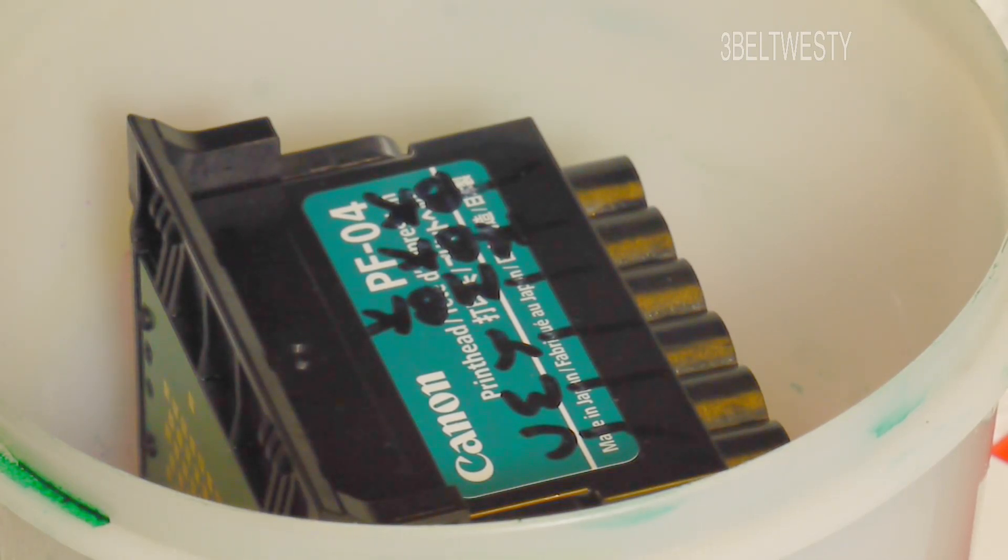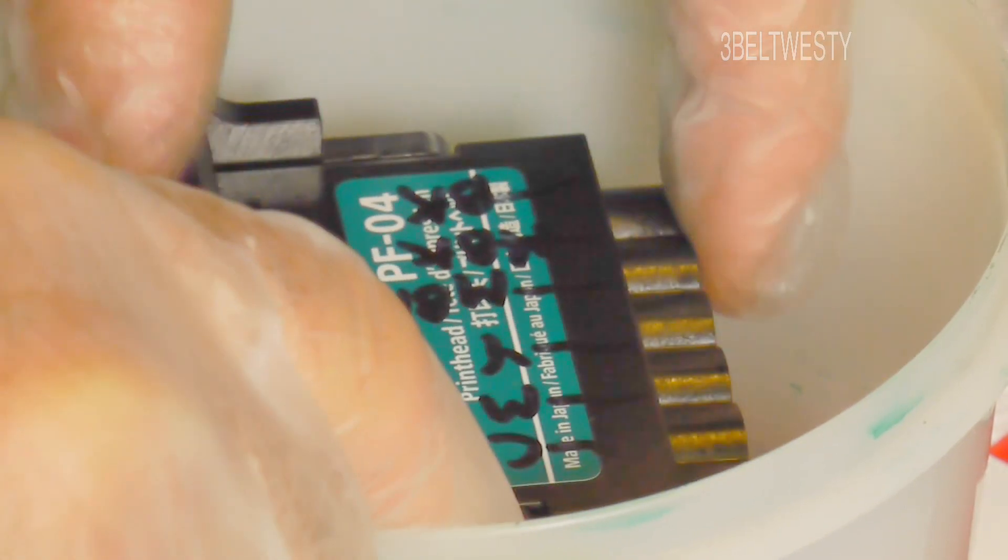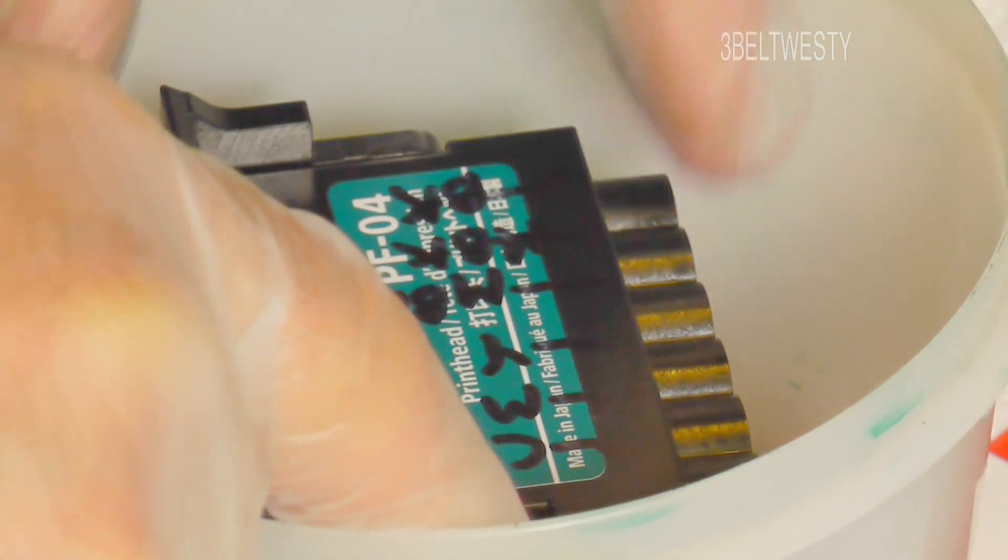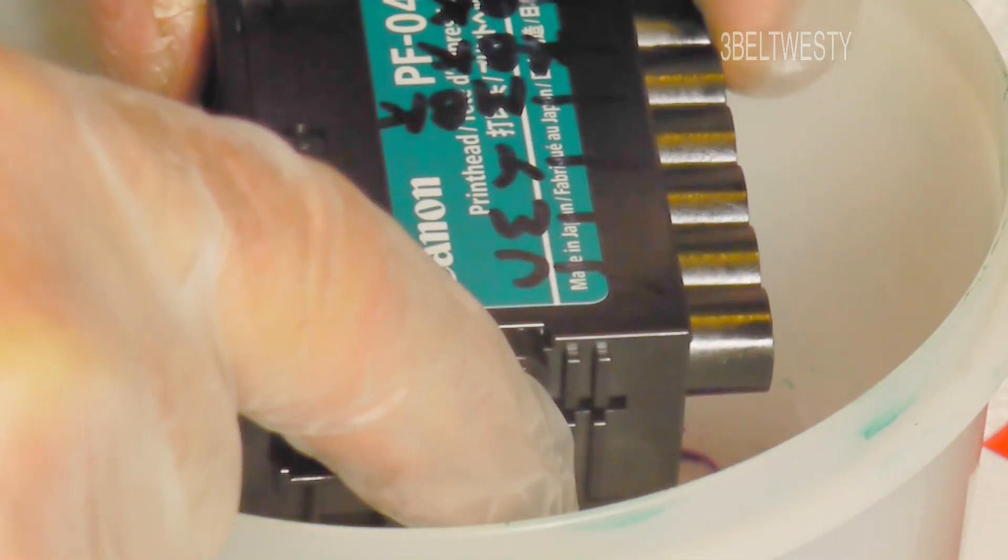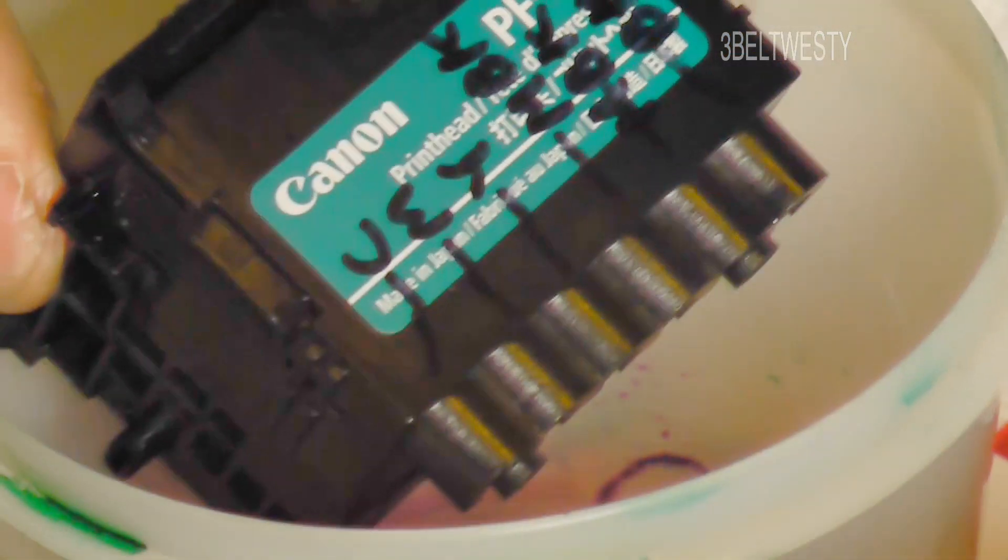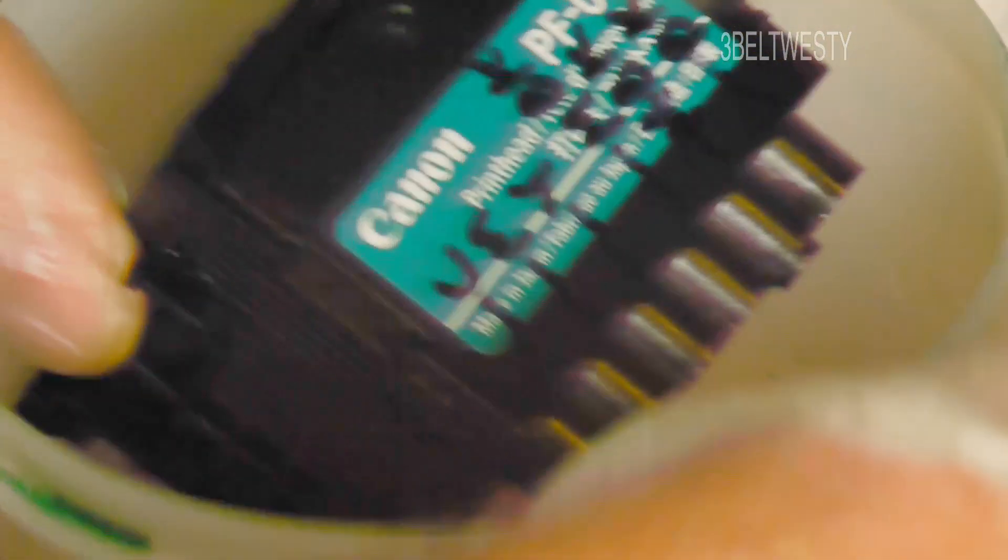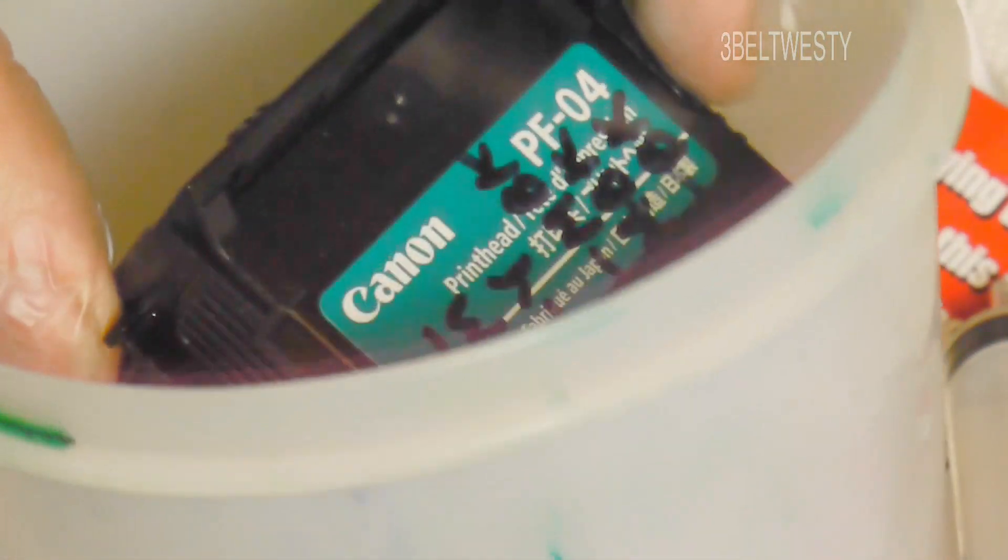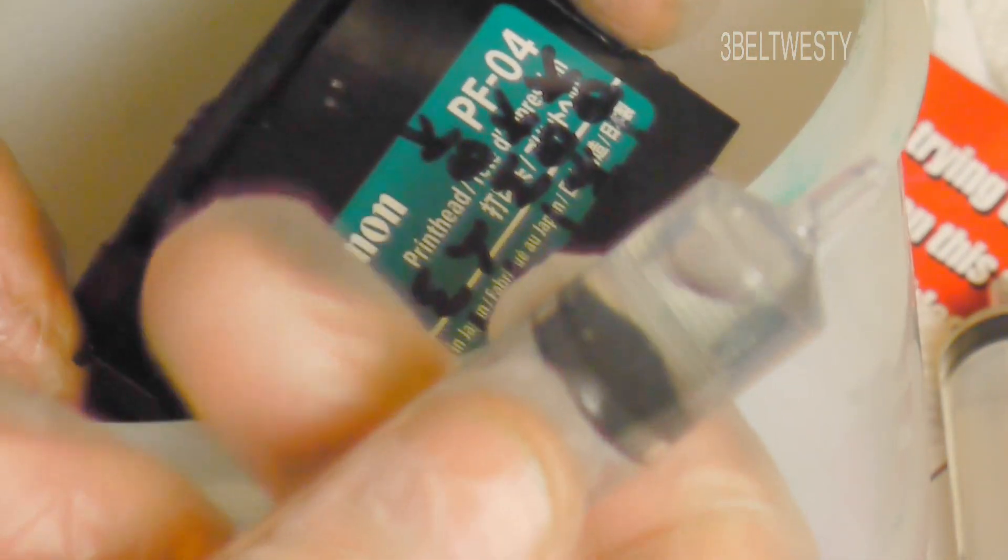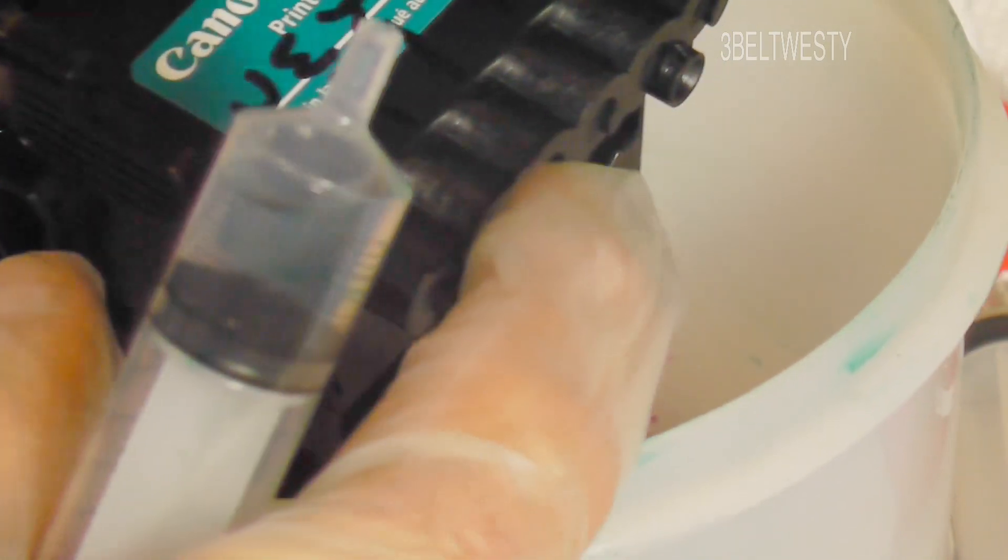We've had the PFO cartridge soaking in the magic bullet head cleaner for about a day and the yellow was clogged. I've got some magic bullet here and I'm going to force it through one of the ports.